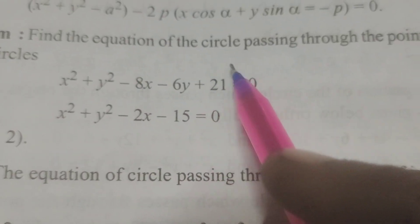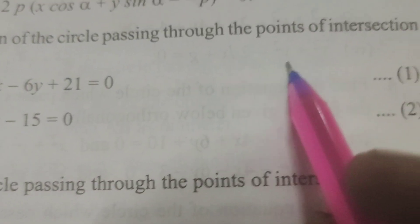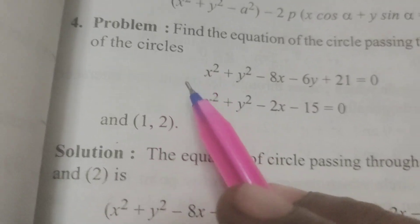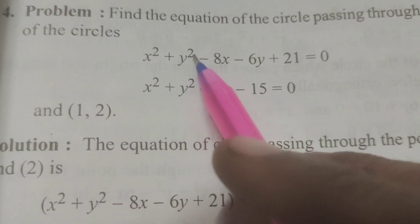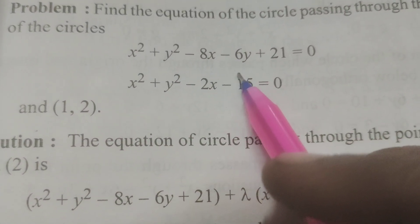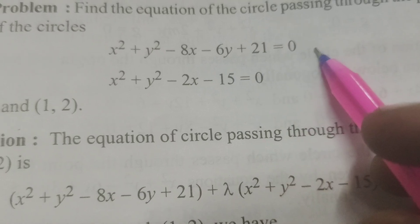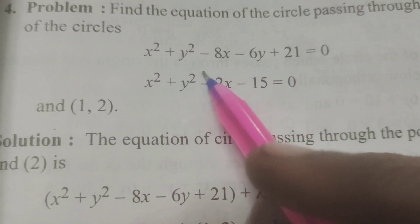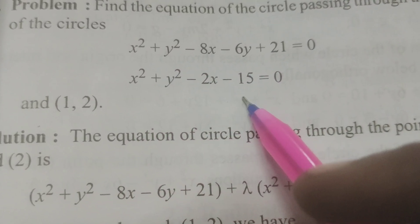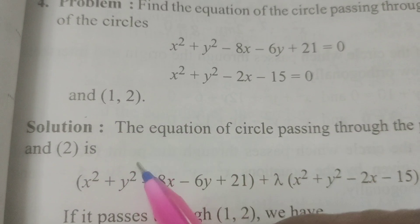Find the equation of the circle passing through the points of intersection of the circles x² + y² - 8x - 6y + 21 = 0 and x² + y² - 2x - 15 = 0, and passing through the point (1, 2).